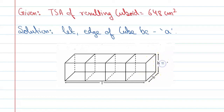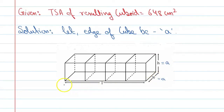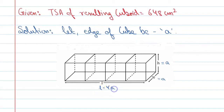So the height of the cuboid will be 'a', the breadth of the cuboid will also be equal to 'a'. And the length will be a + a + a + a, which equals 4a. So these are the dimensions from the figure.